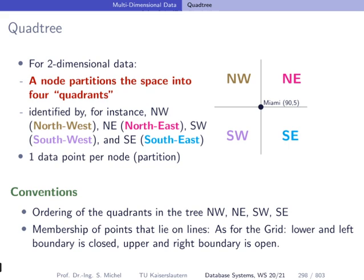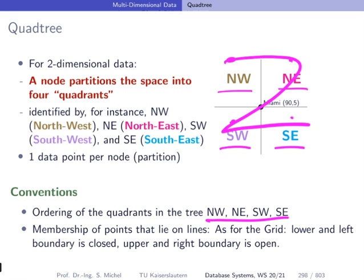So we come, if we do this for two dimensions, because of these quadrants, to the so-called quadtree. The node that I've already depicted here in this example, if we take Miami, partitions the space into four quadrants. We can call them northwest, northeast, southwest, and southeast. We can also enumerate them. If you want to later on draw a tree or implement that, we can say this is the first one, second one, third one, fourth one. So we can have an order like this among the children of a node, Miami in this case. So northwest, northeast, southwest, and southeast.